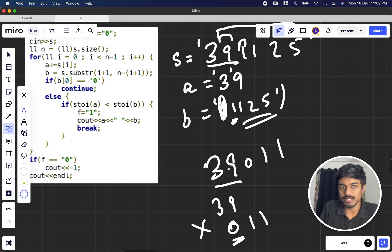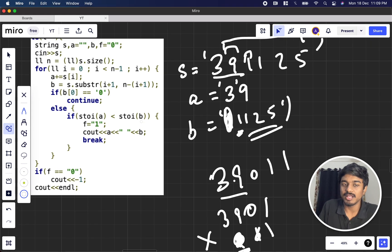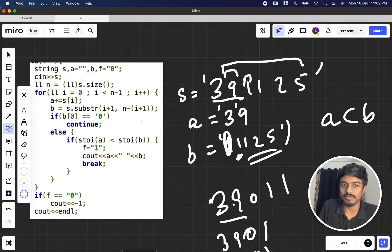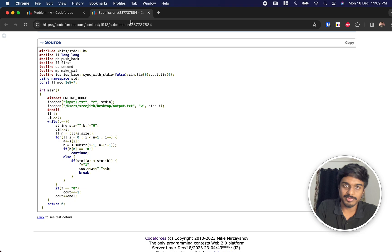390 can come, 11 can come, 3901 can come, 1 can come, like that. If you are unable to form a number where a is less than b, then you are simply putting -1 with the flag. This is the submission link, you can just check it.